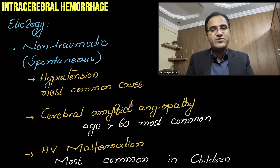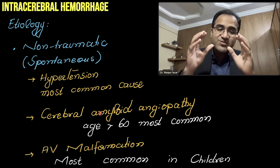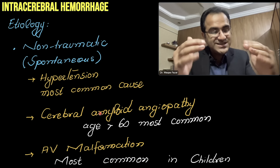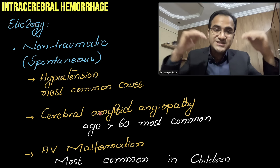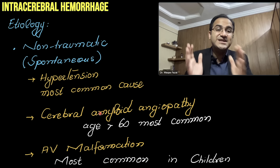In cerebral amyloid angiopathy, there is beta-amyloid protein deposition within the vessels. With age, this deposition weakens the vessel wall, making vessels prone to rupture even with small elevations in blood pressure, resulting in intracerebral hemorrhage. Because this protein deposition occurs with age, it is more common in patients over age 60.